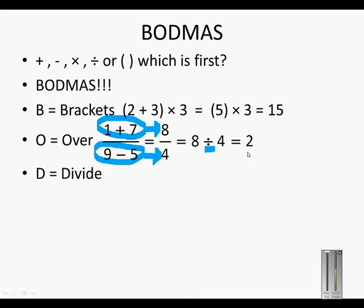The D in BODMAS stands for divide. So in the equation 2 × 12 ÷ 4, you will first do the dividing part of the equation. So 12 divided by 4 equals 3. Now that 3, you will then multiply by 2, and 2 times 3 equals 6.